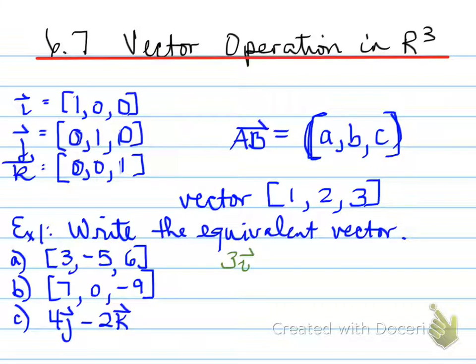You can write them in the forms of i, j, and k. 3, -5, and 6 can be written as 3i - 5j + 6k. 7, 0, -9 can be written as 7i - 9k.